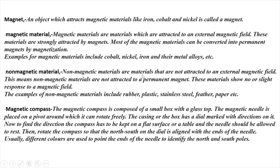Non-Magnetic Materials are materials that are not attracted to an external magnetic field. If you keep a magnet near paper, pencil, rubber, or wooden things, they will not attract towards the magnet. So these are called Non-Magnetic Materials. Non-Magnetic Materials are not attracted to a permanent magnet. These materials show no or slight response to a magnetic field.